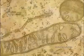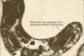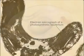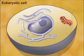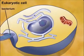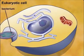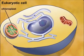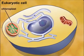Photosynthetic bacteria use photosynthetic pigments embedded in internal membranes to derive energy from sunlight. These bacteria may have come to live within early eukaryotic cells, leading to the evolution of chloroplasts.